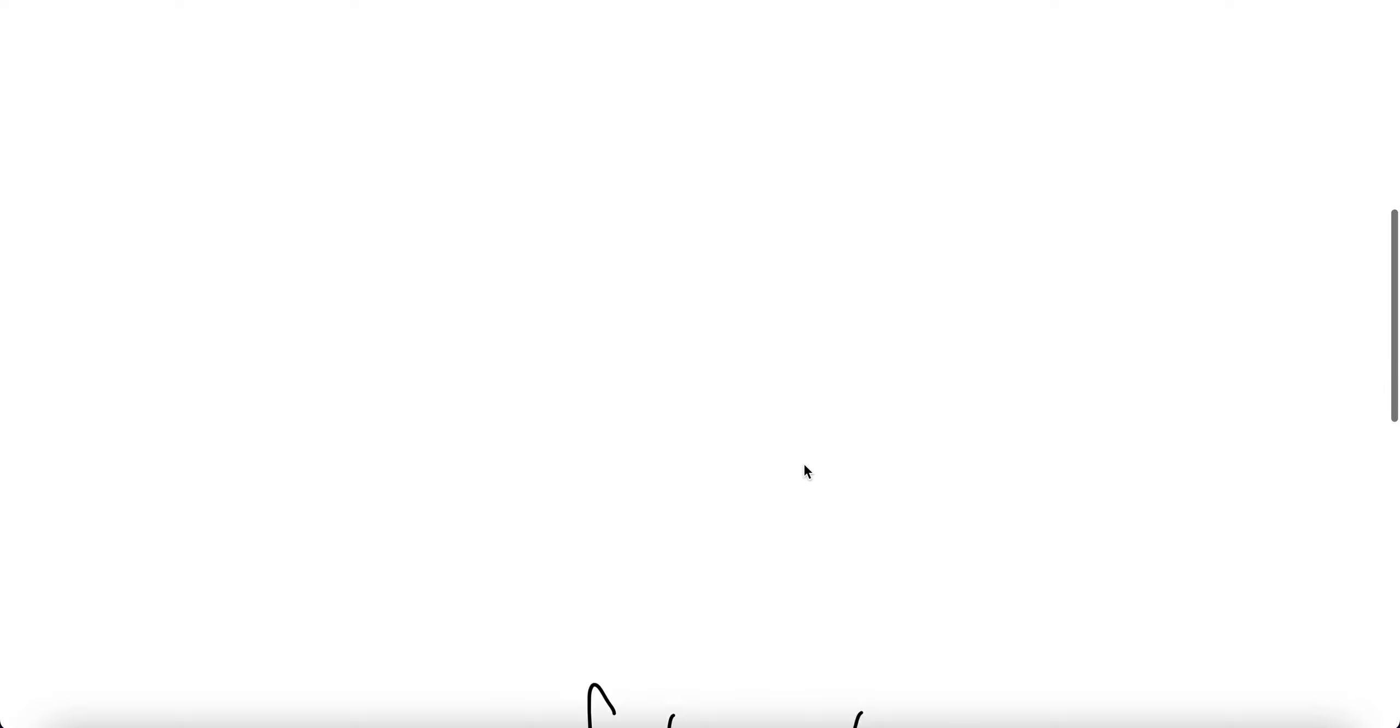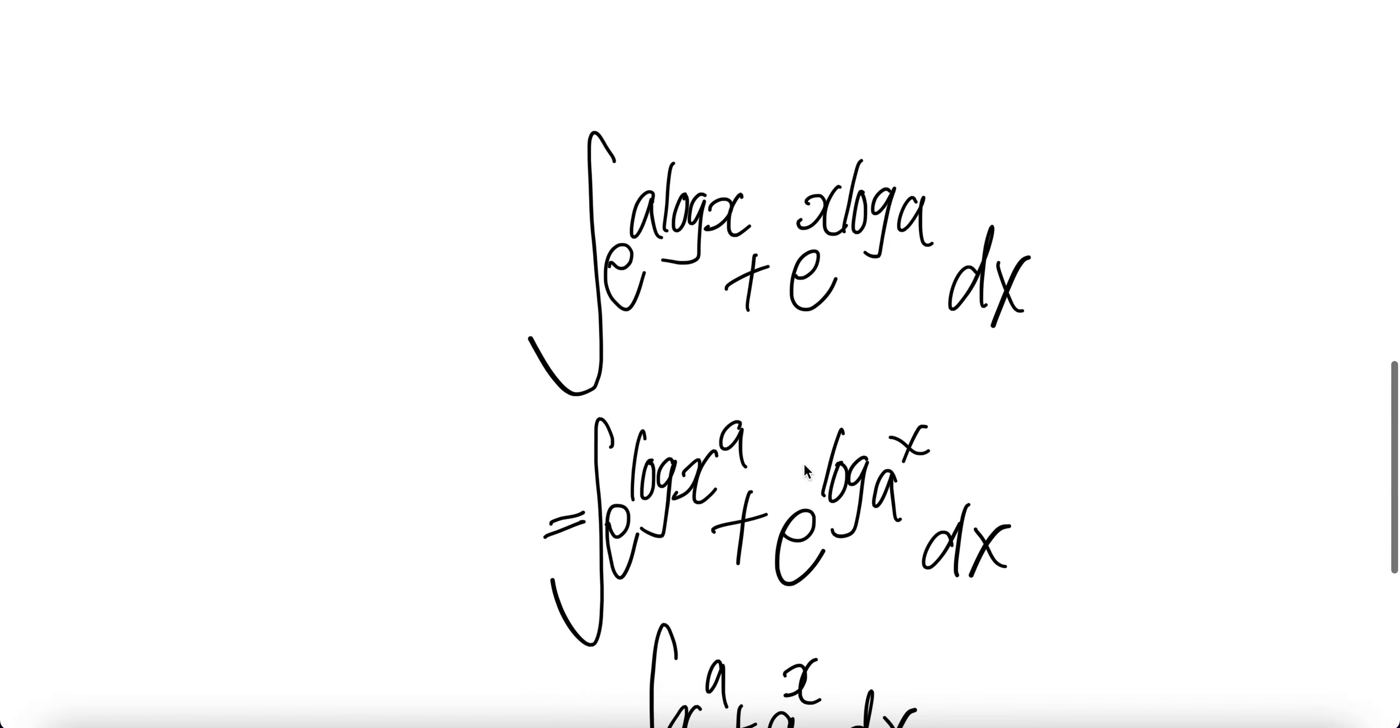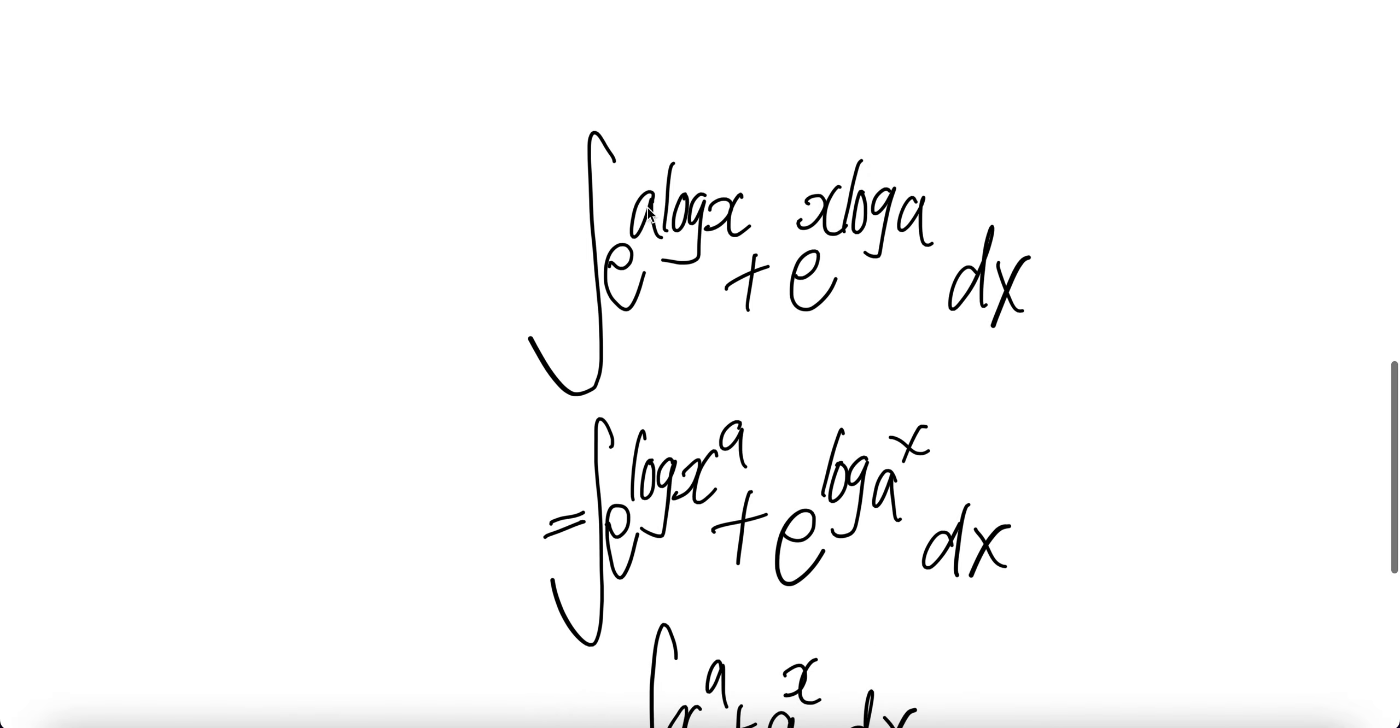e and a are constants. Now, from the property of logarithms, move the a into the argument of the log. You get x to the power a. Move this again here, a to the power x.